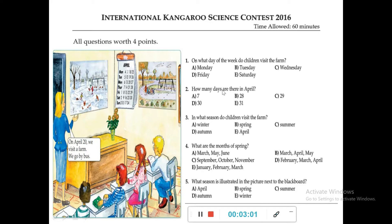Question 2: How many days are there in April? You can see in the calendar that the last day is 30, not 31. Some months have 31 days and some have 30 days. April is a month with 30 days. The options are 7, 28, 29, 30, and 31. Since the calendar shows April has 30 days, D is correct.